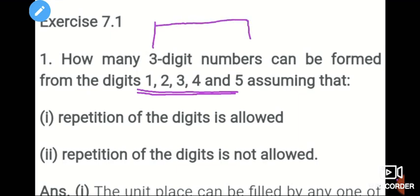First of all, we will make 3-digit numbers. Repetition of the digit is allowed, which means you can repeat the numbers 1, 2, 3, 4, 5 — you can repeat all numbers. So this first box can be filled in 5 ways.